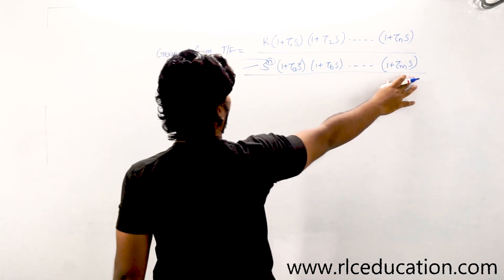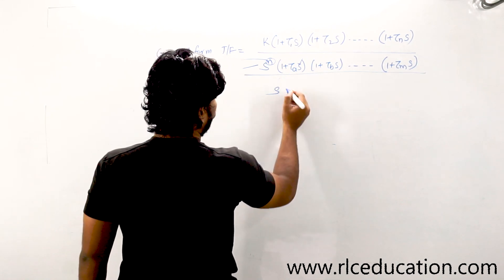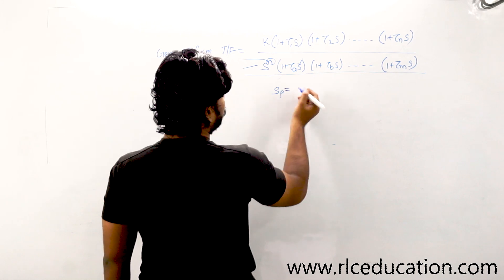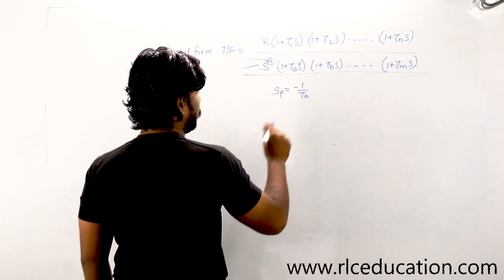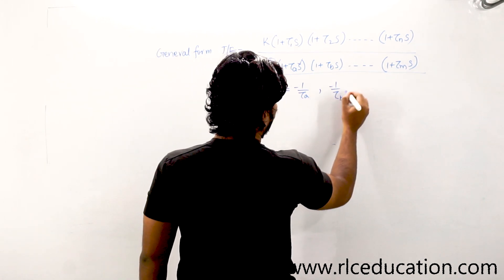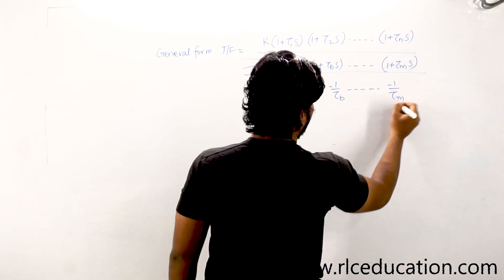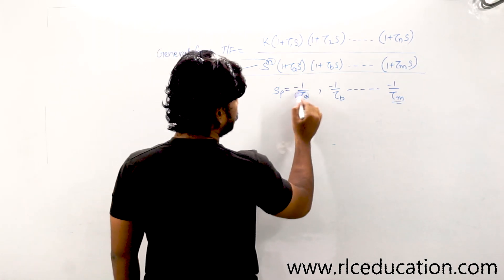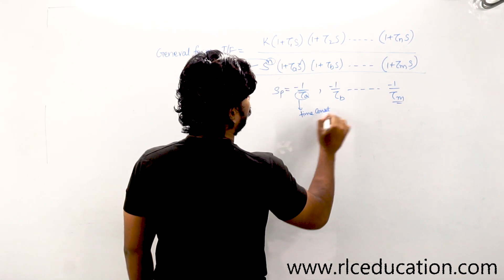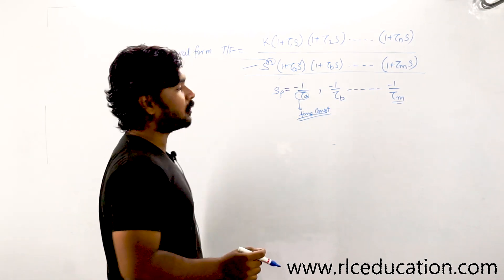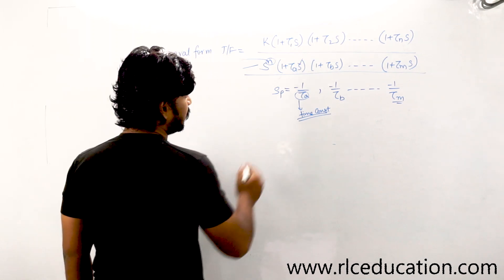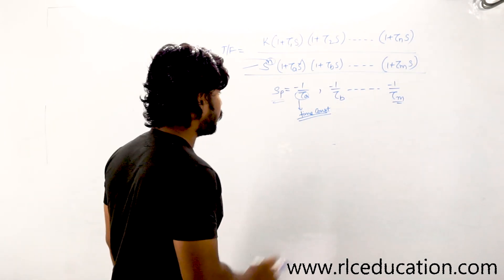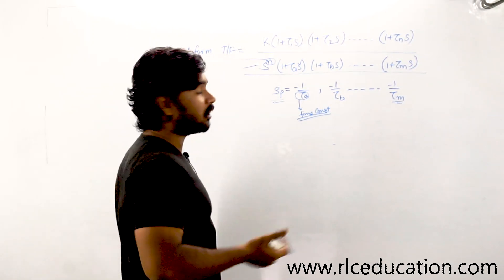Now from the generalized transfer function form, the poles are at s = −1/τa, −1/τb, and so on up to −1/τm. So a pole is inversely proportional to the time constant τ. Time constant is the time taken for the system to respond to a given input. If you know the value of a pole, you can take its inverse to get the time constant directly — and from that, you can find the speed of the response of the system.